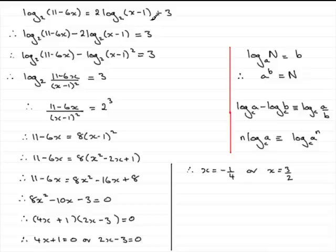So therefore, x cannot be minus a quarter. But it can be 3 over 2, 1 and a half. Because if you substitute it into here and here, you'll be logging a positive number. So that's a place where it's very easy to trip up. So I'm just going to basically say then that since x minus 1, that's this bit here, must be greater than 0, therefore x must equal 3 over 2, or 1 and a half or 1.5.